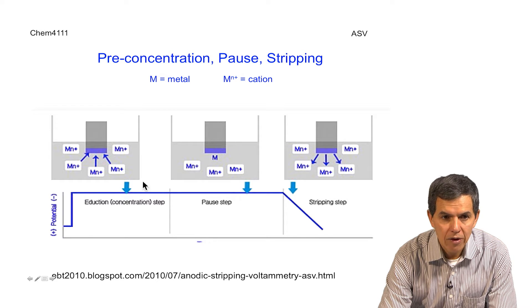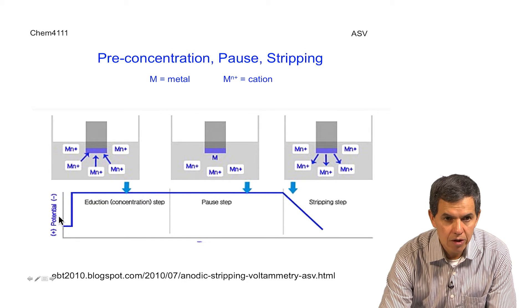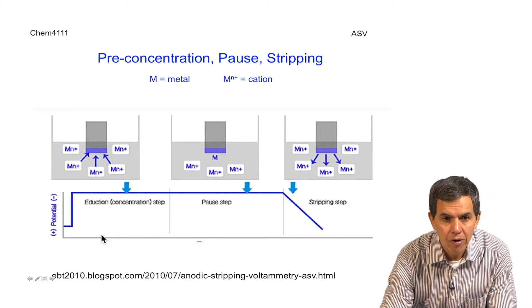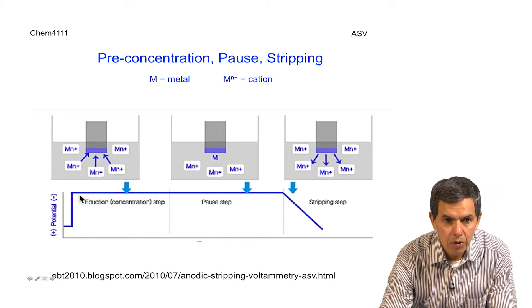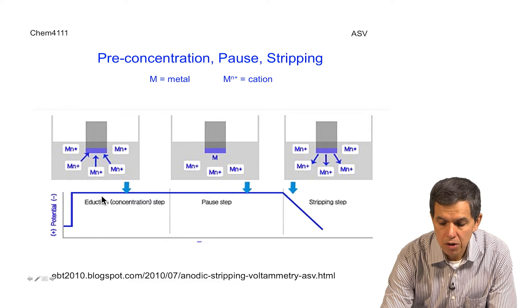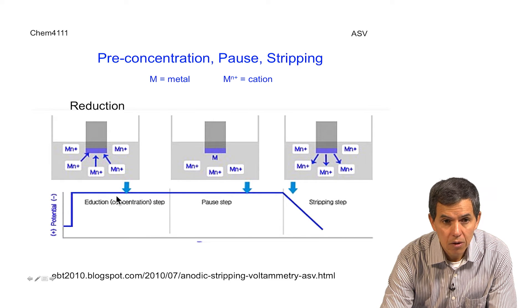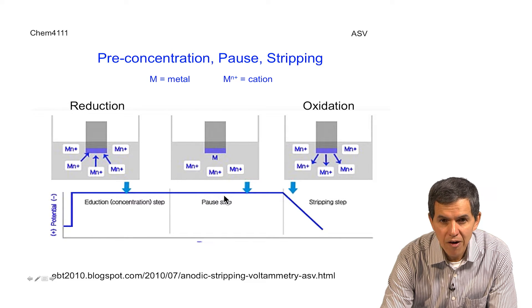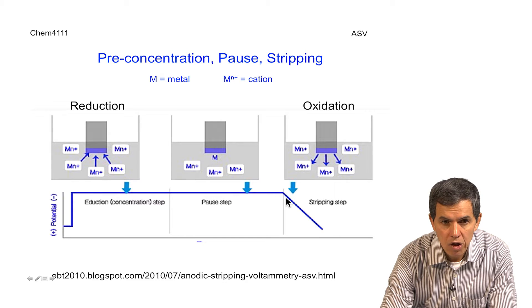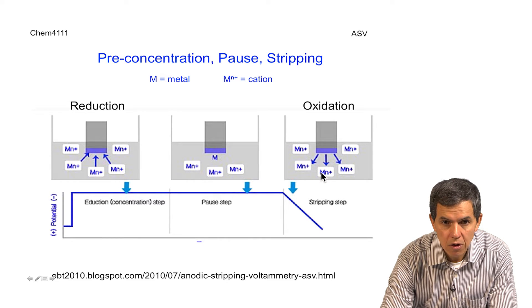At the bottom of this, we have a representation of the potential versus time that is applied at each of the different steps. Negative potential to cause reduction, then reduction still being applied during deposition but without stirring, and then finally oxidation in which we actually make the potential more positive so that the metal can be removed from the surface of the electrode.